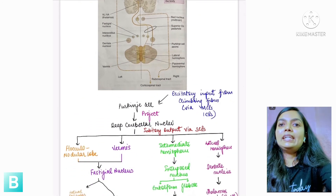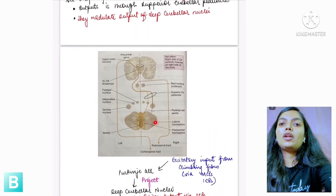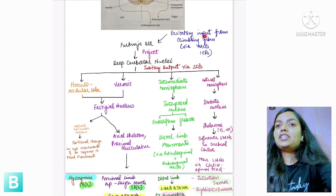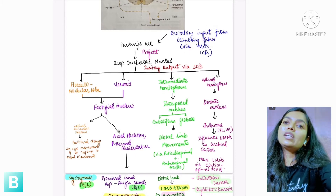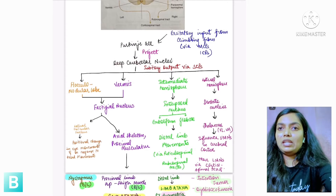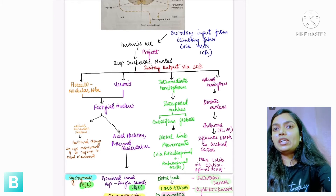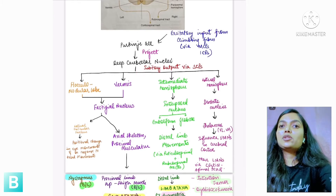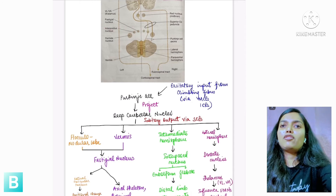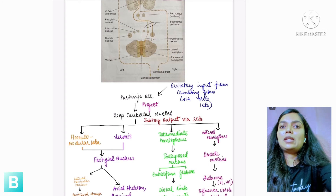Now let's discuss which part of the neuron projects to which part of the cerebellar hemisphere. Excitatory inputs to the cerebellum come from climbing fibers via the Purkinje cells. After processing, output projects into the deep cerebellar nuclei. There are effectively four deep cerebellar nuclei — fastigial, emboliform, globose (the latter two comprising the interposed), and dentate — and each corresponds to a part of the cerebellar hemisphere.